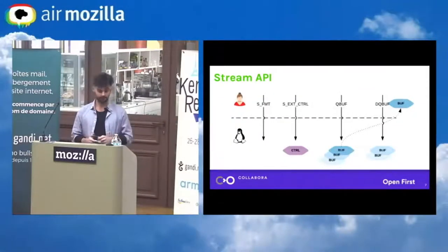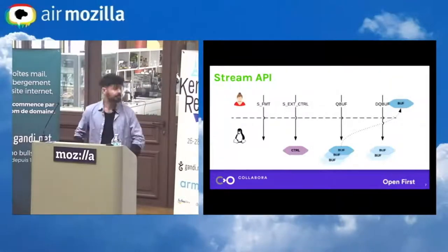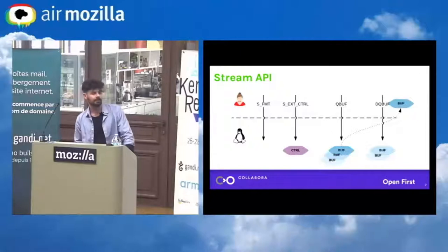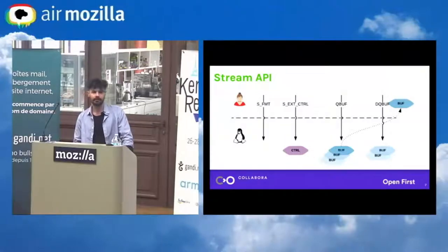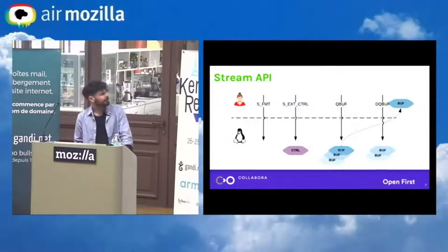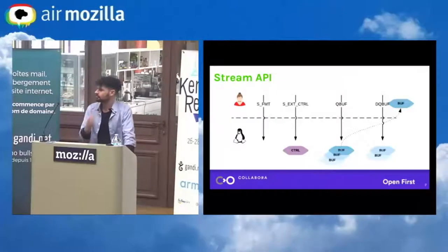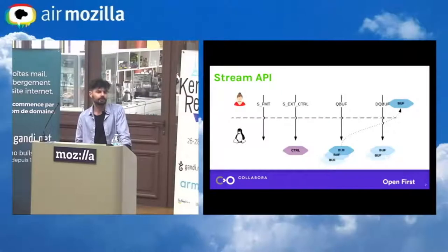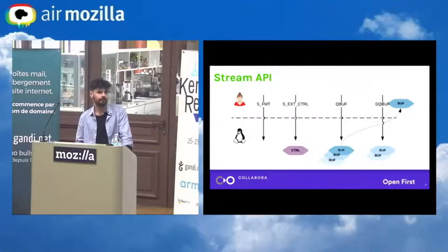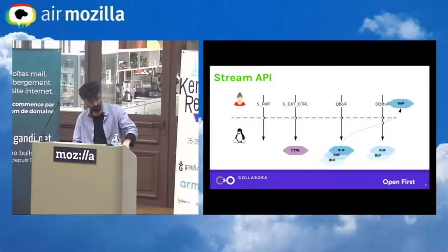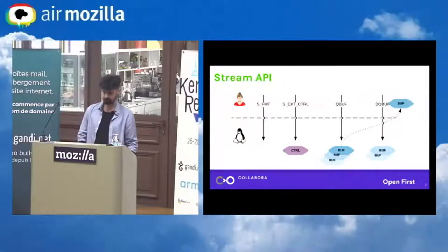That's pretty much all we have — it's a very nice API. Probably thousands of vendors use this, either directly or via some framework like FFmpeg, GStreamer, or similar. For instance, the biggest cloud surveillance video vendor in the world uses this to drive their analog video — it's around 10,000 cameras or something, so we are all being watched.